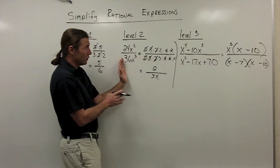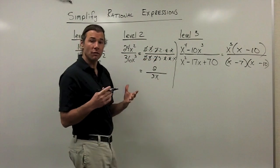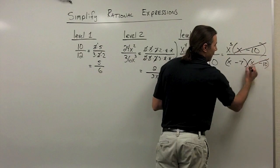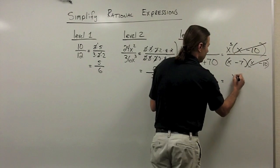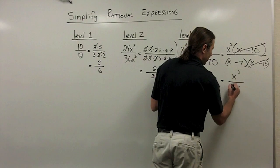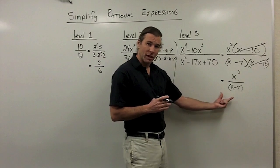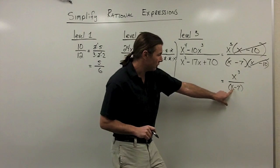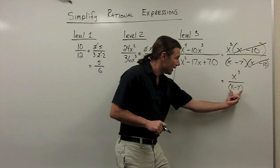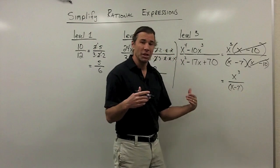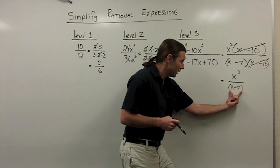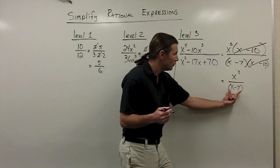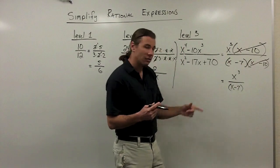Just like I did at level 1 and level 2, I've now factored the numerator and denominator, and I'm going to look to divide out any common factors. I do have a common factor of x minus 10, so I'm going to divide that out. I'm left with x to the third over x minus 7. I'll leave the parentheses on x minus 7 because these factors are whole expressions — I can't treat x and negative 7 as separate factors. The word factor means things being multiplied together, and x minus 7 is one factor. In the top I have three factors: x times x times x. But there is no factor of just x in the denominator, so that's as simple as I can get this rational expression.